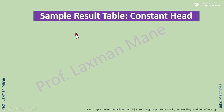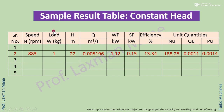The results for each load are entered in a result table showing speed, head, discharge, water power, shaft power, efficiency, and unit quantities. This constitutes the constant head results used to obtain main characteristic curves.